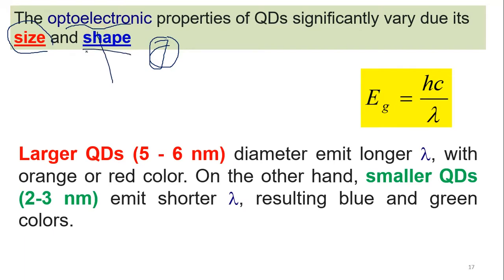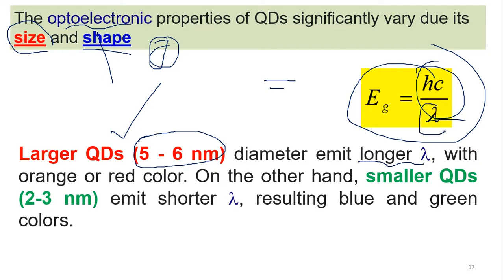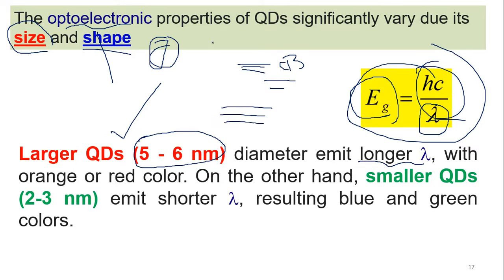I will explain a little bit about size. We know the basic formula E = hc/λ, where hc is the constant 1240, λ is the wavelength of emitted light, and E is the energy between the valence band and conduction band. If we have a larger quantum dot — say 5 to 6 nanometers — it will emit a longer wavelength, which means it has a small band gap. In a bulk material, there are many electrons, and because so many electrons fill the bands, the band gap becomes smaller.